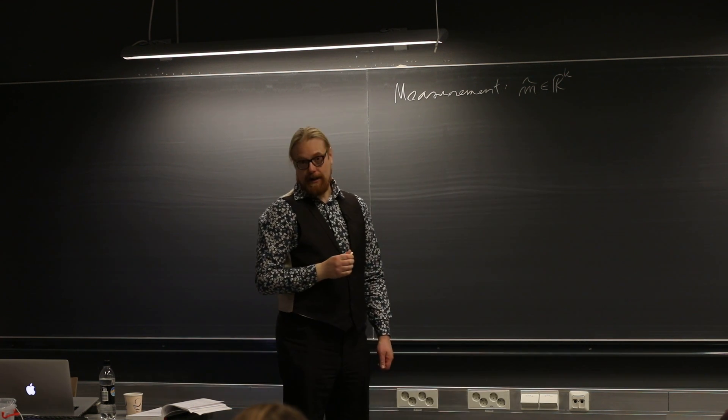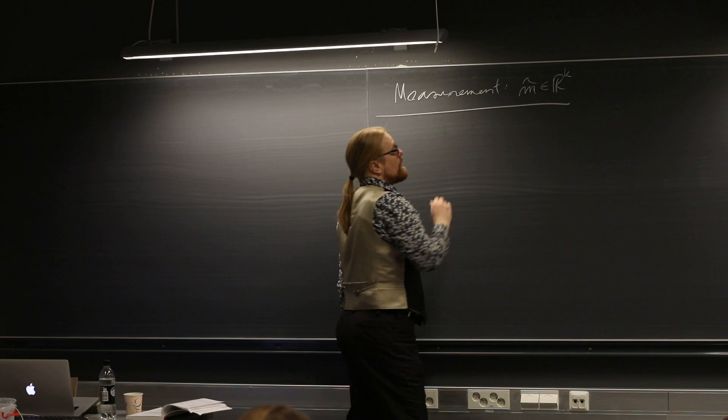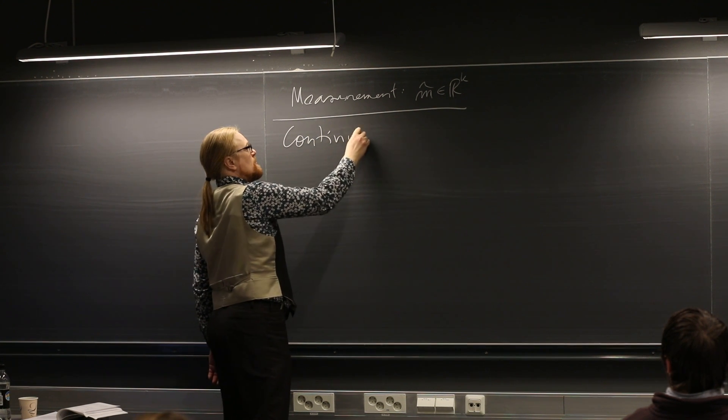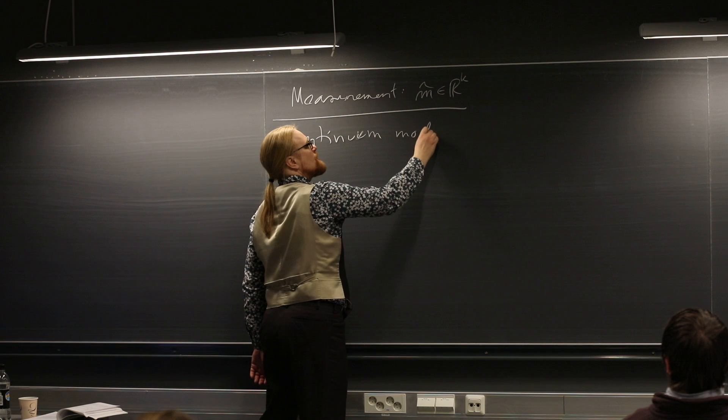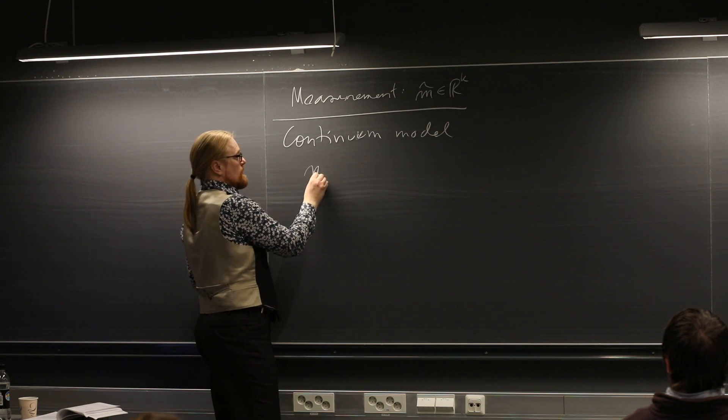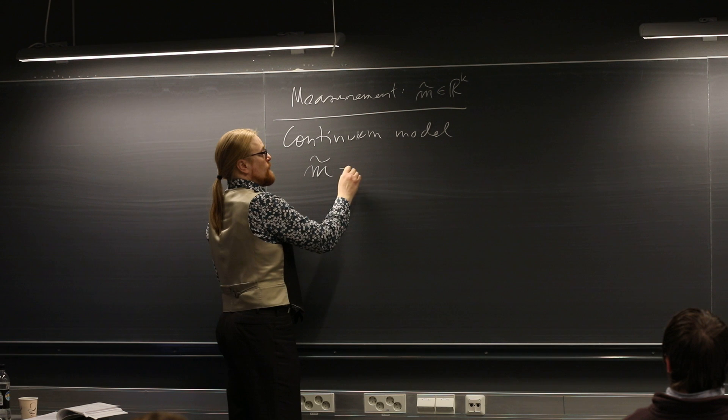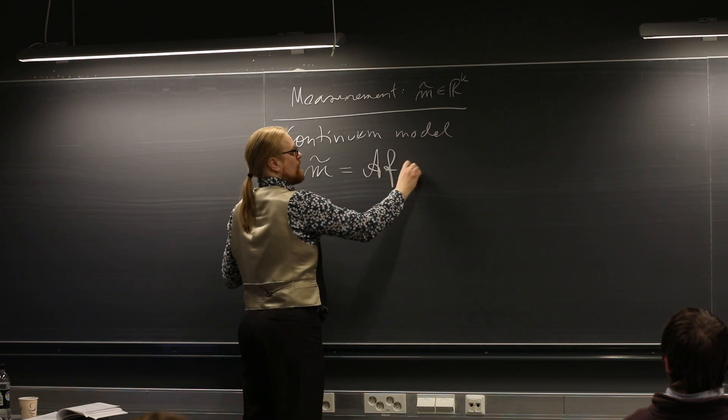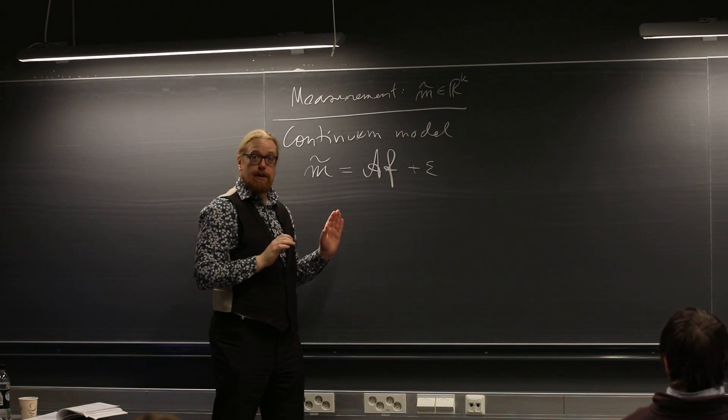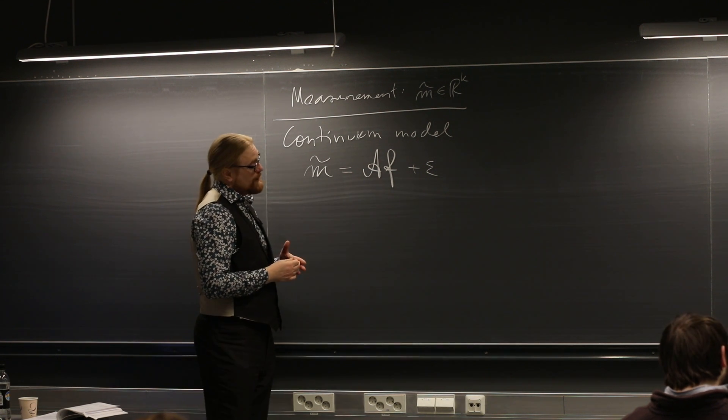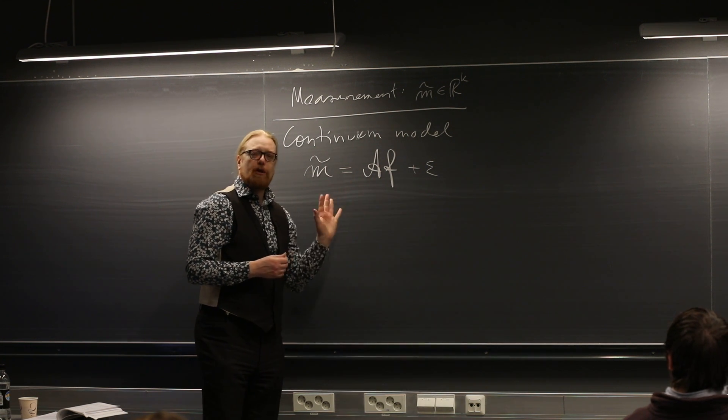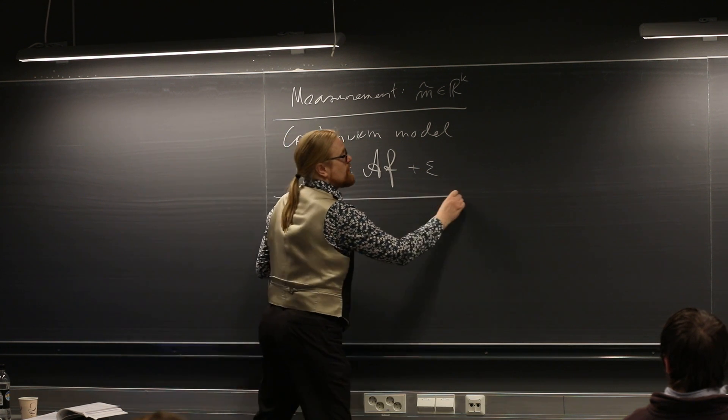Given by some device, we build a so-called continuum model for the measurement process. So we have to model the device, whatever it is we use. And we build such a model that produces our measurement data from F, which is a function, so not a discrete object, it's a function, maybe defined on a Euclidean space. A beautiful is an operator, so this is kind of a very accurate model, maybe based on mathematical physics, like partial differential equations or something like that.